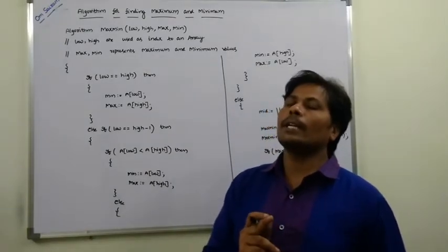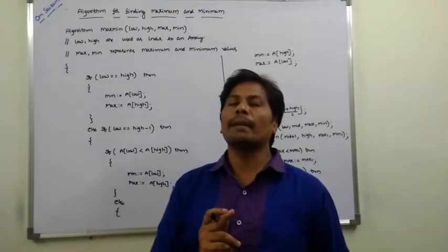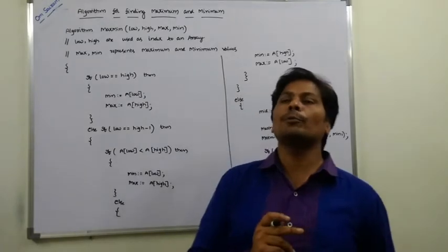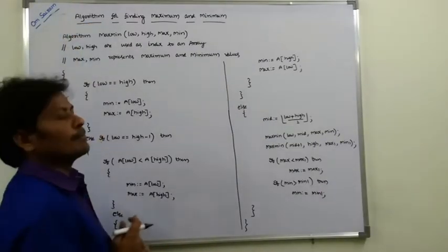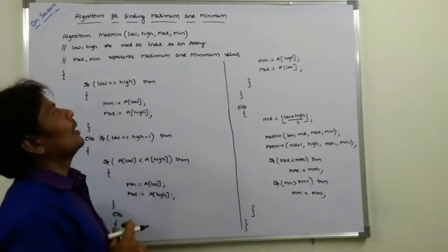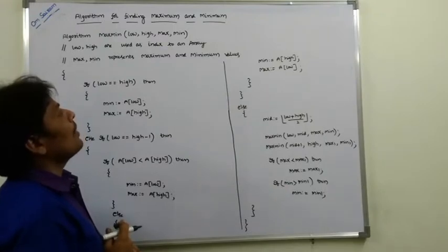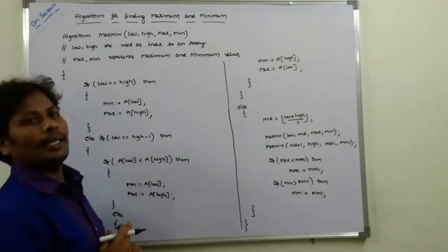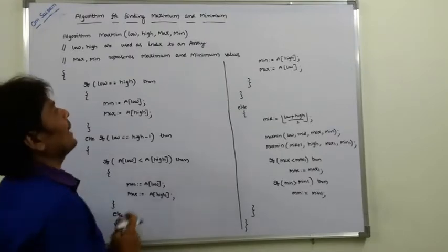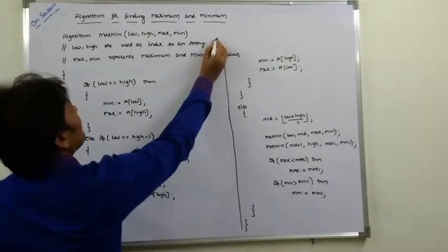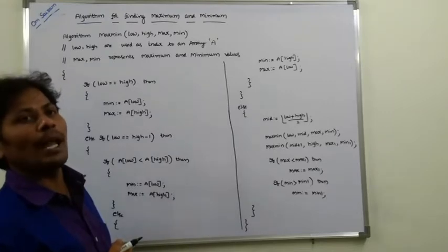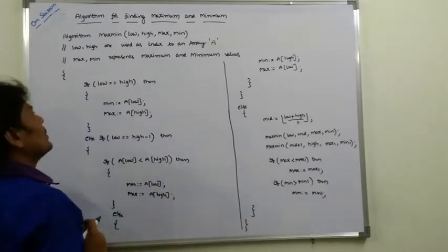Each subproblem can be solved independently to find the maximum and minimum value. The algorithm name is max-min, taking four parameters: low, high, max, and min. Low and high are used as indices to array A, and max and min represent the maximum and minimum values from the given array.